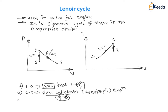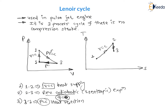The third and last process, 3 to 1, is constant pressure heat rejection. At constant pressure, heat is rejected. Therefore, from 3 to 1 pressure remains constant, giving a straight horizontal line on the PV diagram. On the TS diagram, the slope of a constant volume process is more than the slope of a constant pressure process, so the constant pressure process has a lesser slope compared to the constant volume process.